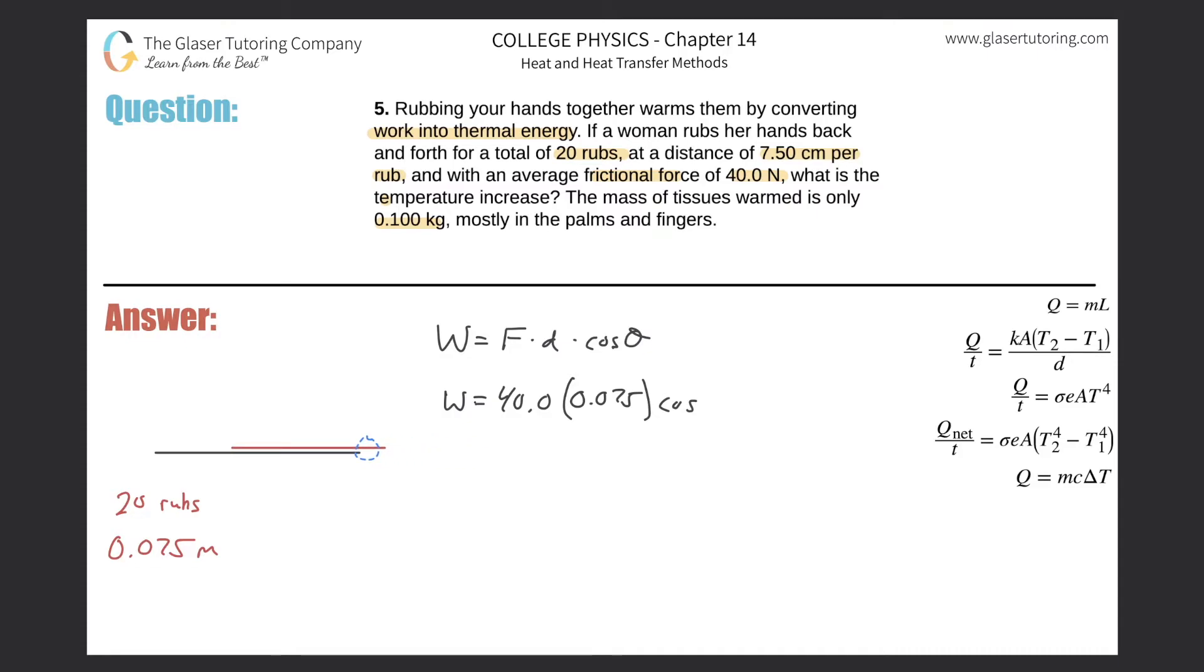That means that if distance is to the left and friction is to the right, what's the angle between them? If one's pointing this way and the other's pointing this way, what's the angle between them? 180. That's where the negative sign comes from. Cosine of 180 is negative.